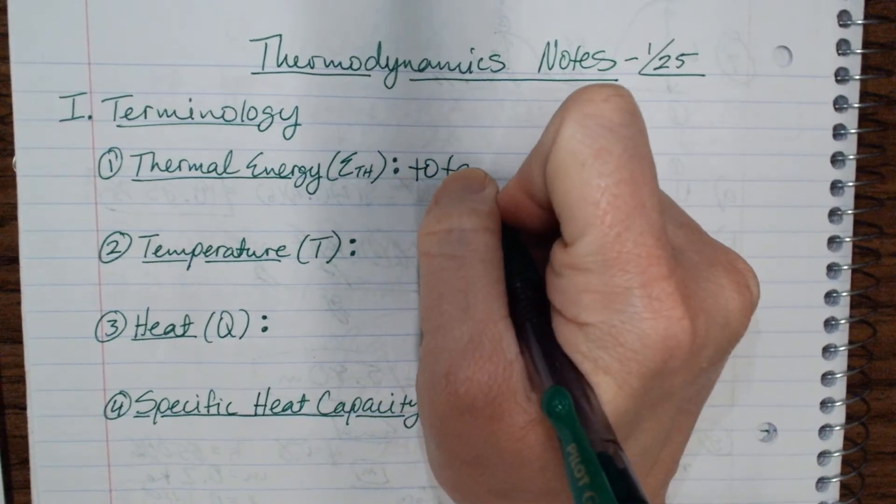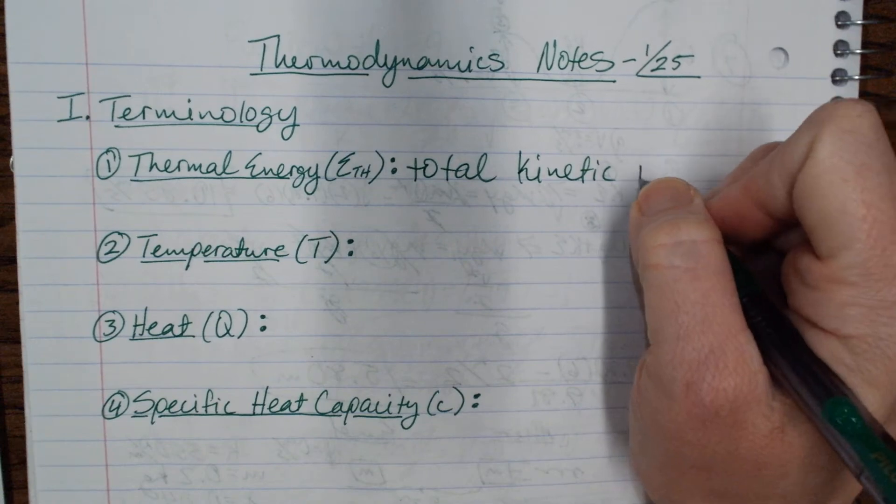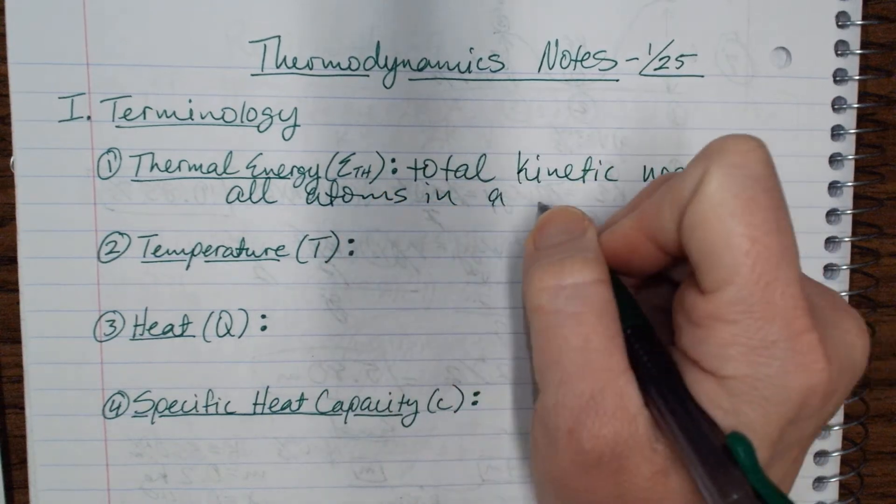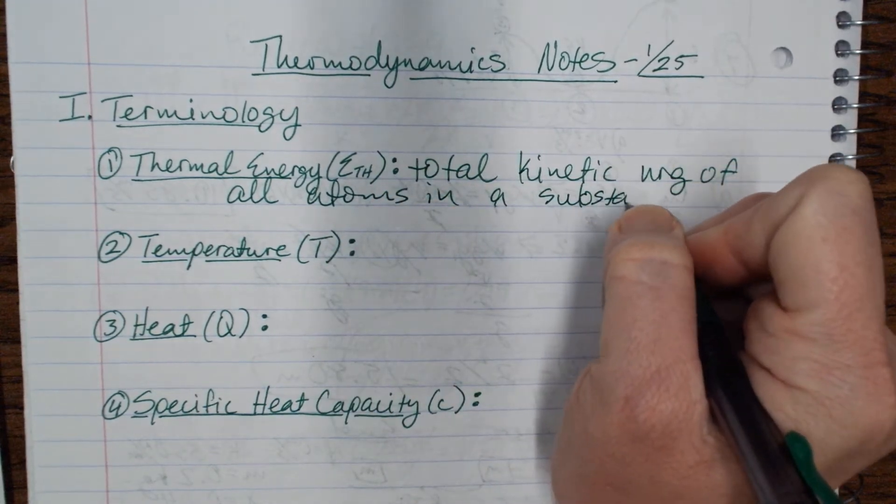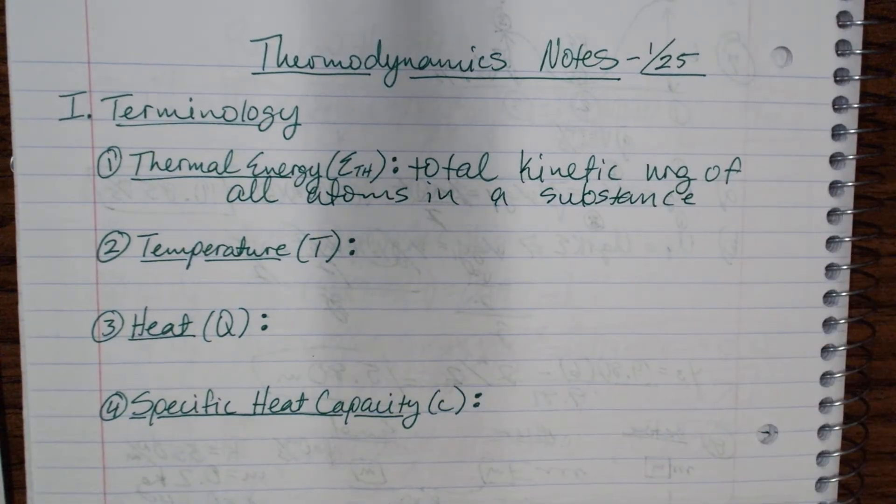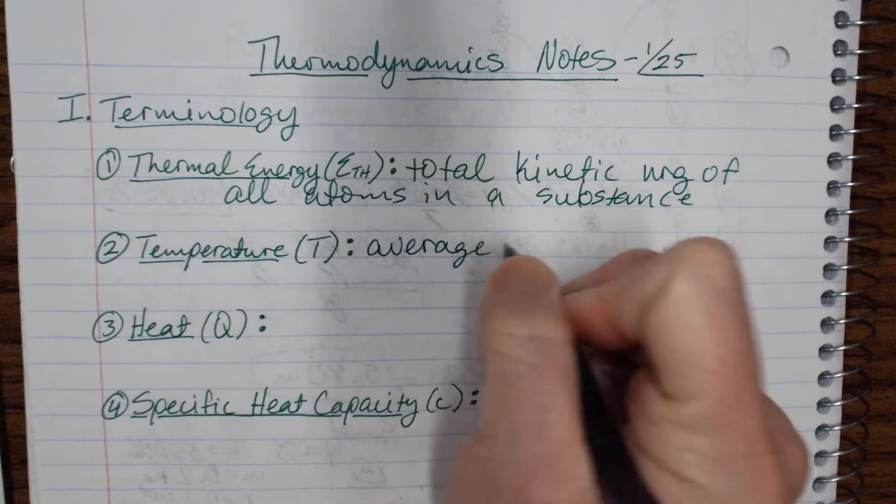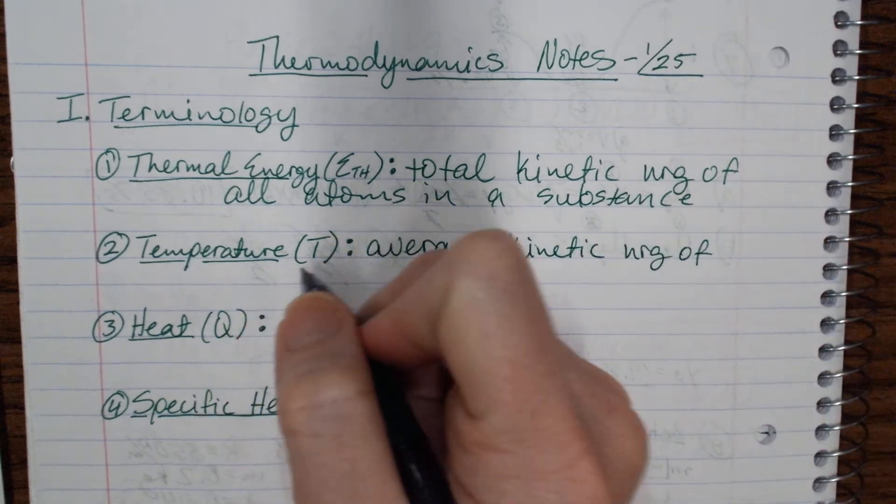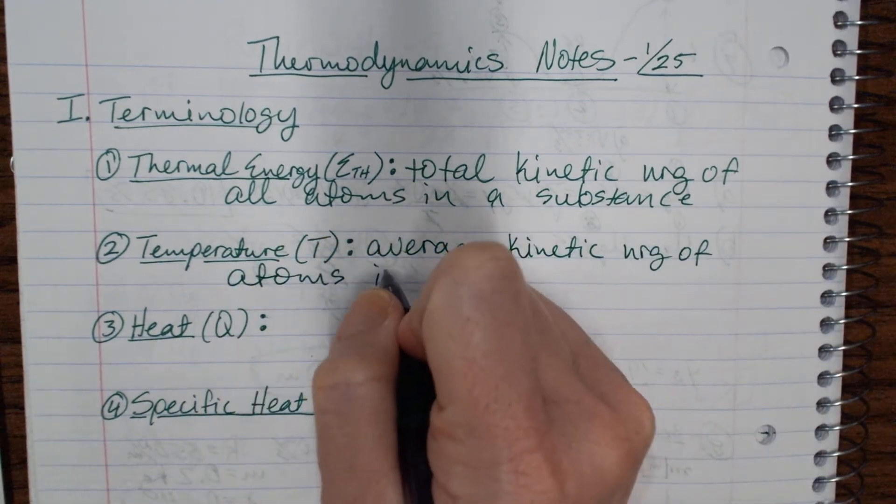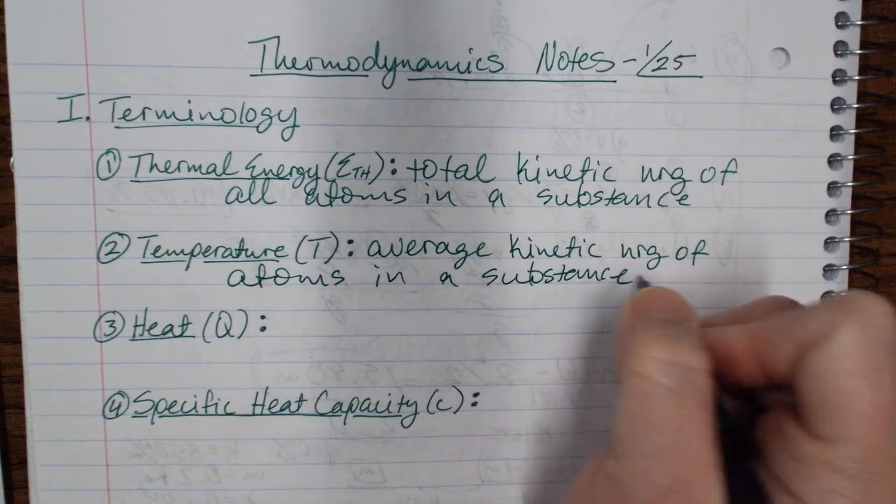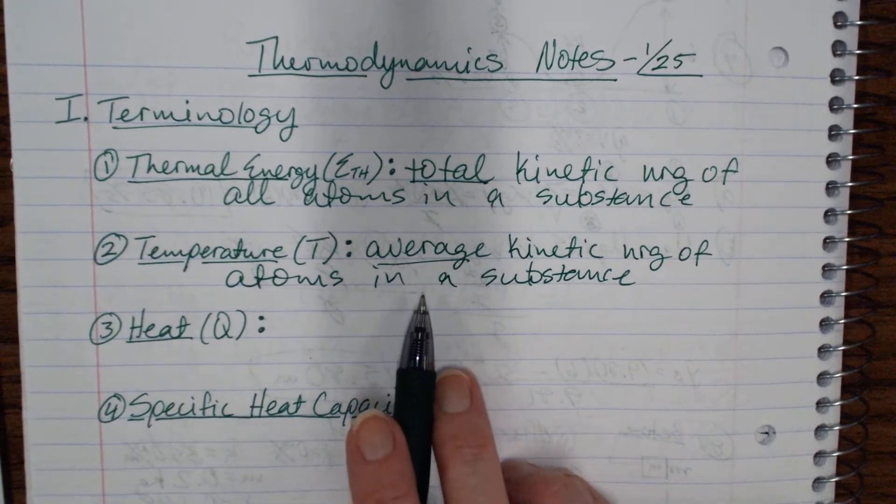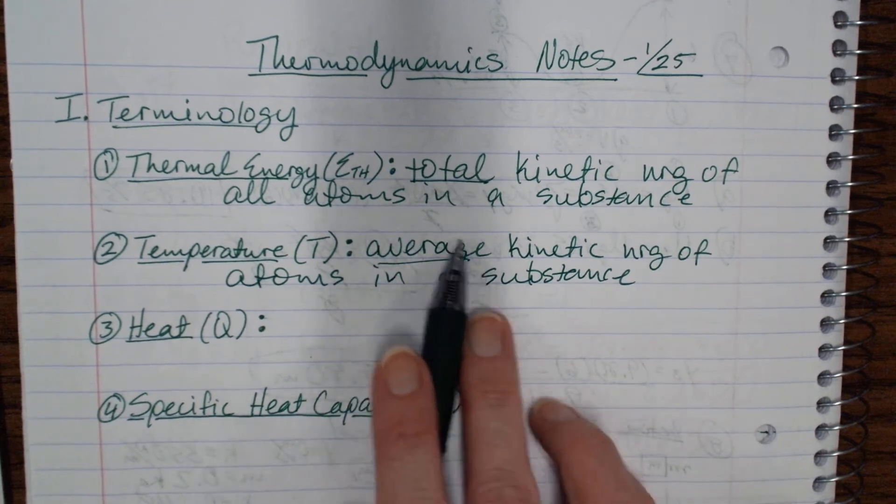Thermal energy is the total kinetic energy of all atoms in a substance. And temperature is the average kinetic energy of atoms in a substance. So notice that's different. Total and average are different. Total depends on mass. Average doesn't depend on the mass or the amount because it's an average of all of the energy.